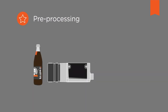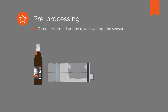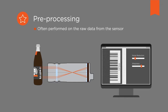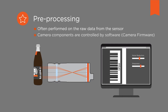In the camera itself, the first pre-processing steps are often performed on the raw data from the sensor after image acquisition. For example, to correct image distortions or to influence the characteristics of the sensor. These software components are called camera firmware.